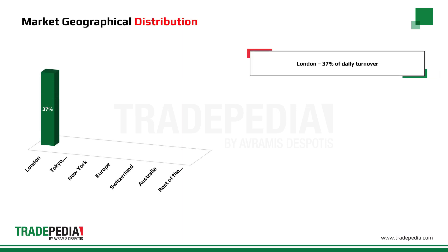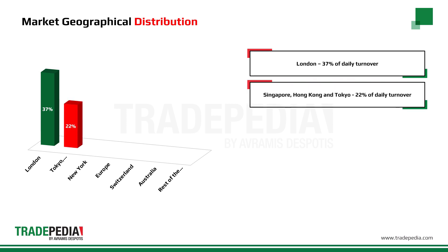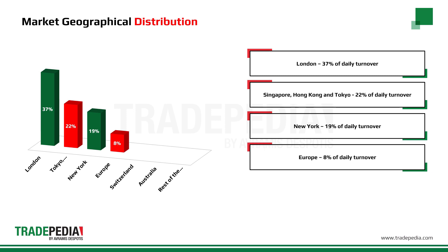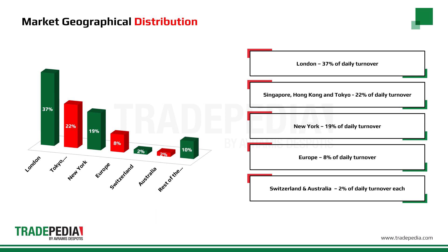Trading in London accounts for 37% of the total daily turnover, making it by far the most important global center for foreign exchange trading. Singapore, Hong Kong and Tokyo have 22% of daily turnover. New York has 19%, Europe has 8%, and Switzerland and Australia have 2% of daily turnover each, leaving 10% to the rest of the world.